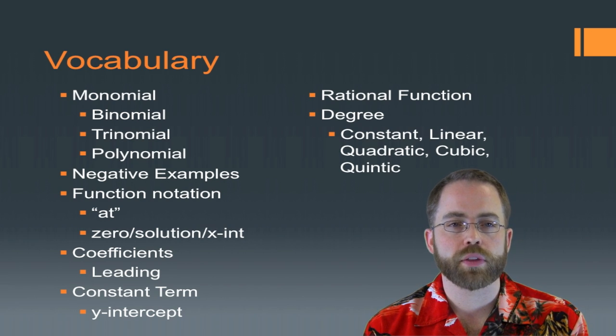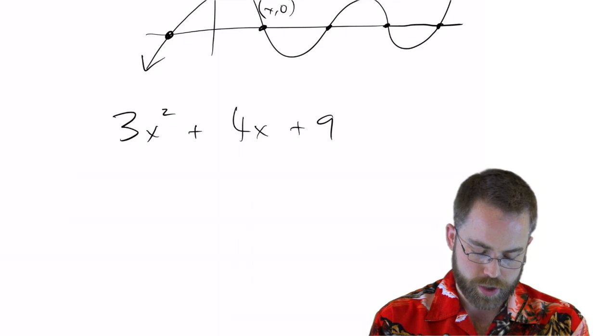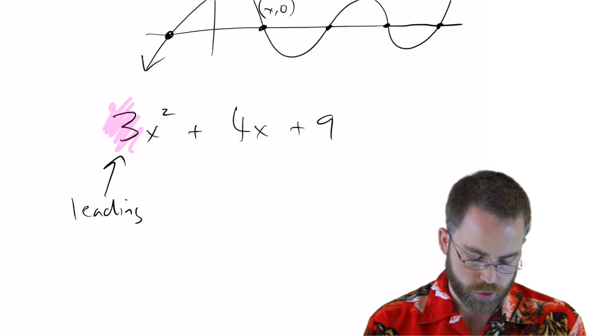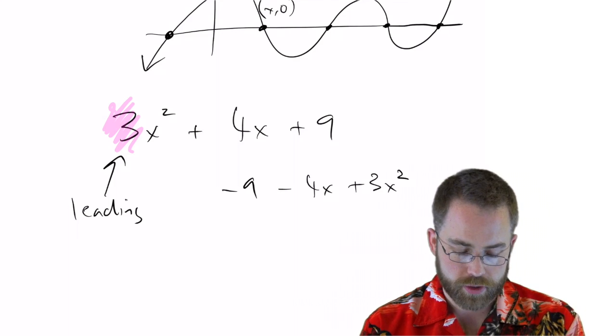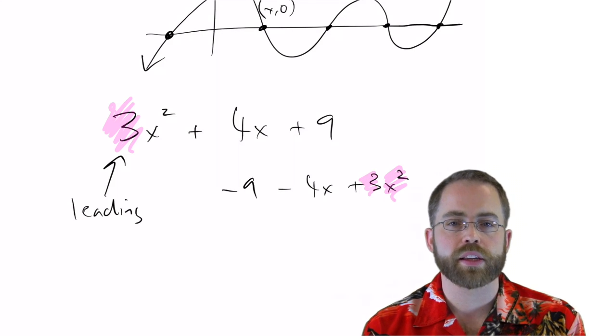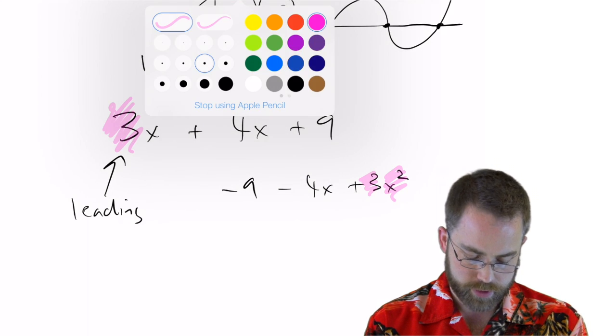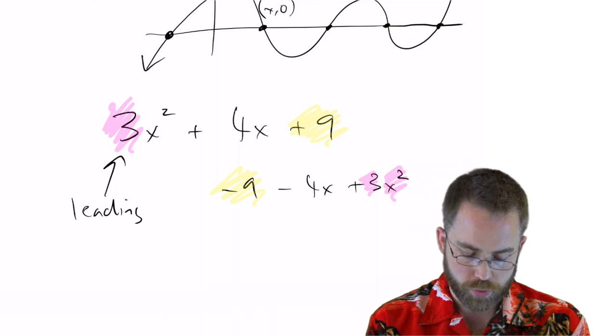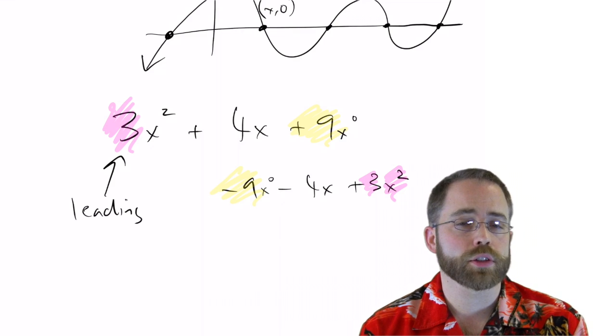When we talk about coefficients, the most important one, the one that we're going to care the most about is the one that's out front. So 3x squared plus 4x plus 9, this 3 out in the front is what is called the leading coefficient. And of course, because it's a math book, they're going to try to trick you, and they'll write it as negative 9 minus 4x plus 3x squared. And you have to not get confused and say, you didn't fool me. This guy is the one with the biggest exponent, and then this 3, therefore, is the leading coefficient. This is different than the constant term, which is the one that comes last, the one with no x on it. You could write, if you were pedantic, x to the 0, but it is the constant term because x to the 0 is 1.